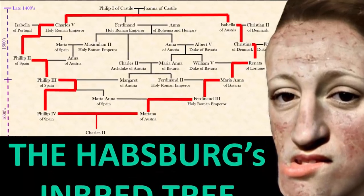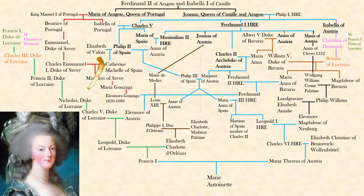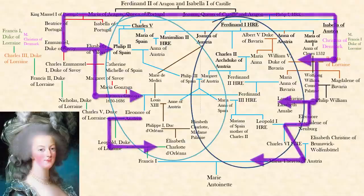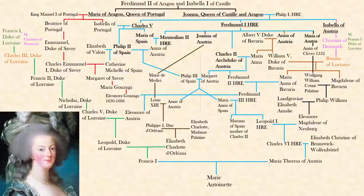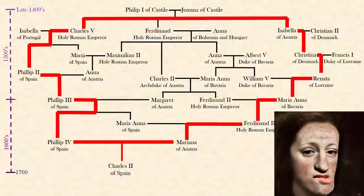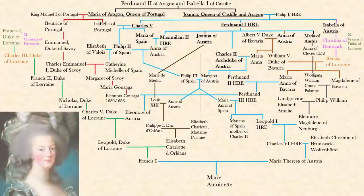This is the family tree of Marie Antoinette, who is a mixture of the Spanish Habsburgs and the Austrian Habsburgs. In this video we will see how those two lines converge into the famous French queen. I'm going to try my best to explain it — it's not as simple as Charles II's family tree; this one is like a railroad track at a major depot.